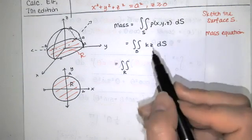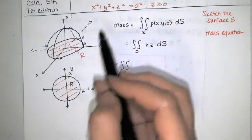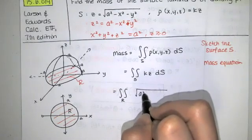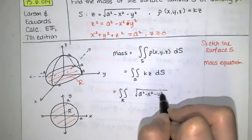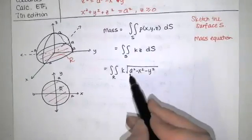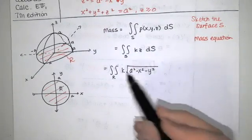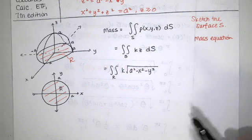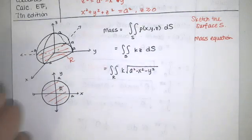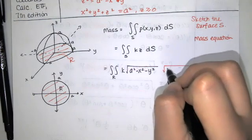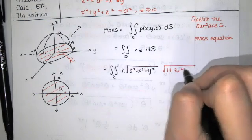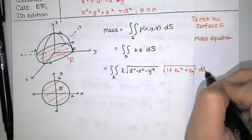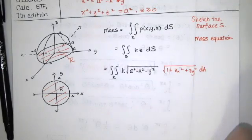That can be done pretty easily. Since z is given by the positive square root of a squared minus x squared minus y squared, k·z becomes k times that square root expression — already in terms of x and y only. The surface area piece is given by the square root of 1 plus the partial of z with respect to x squared plus the partial of z with respect to y squared, times dA.